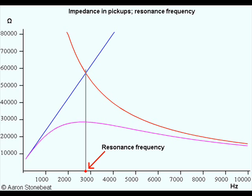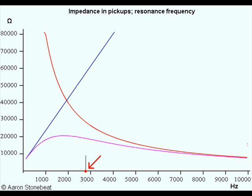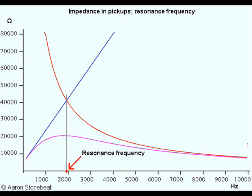Now imagine you take a much longer cable or a lower quality cable, so that the total capacitance in the system would rise to 2 nF. See what happens to the resonance frequency — it drops to almost 1900 Hz.